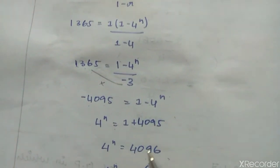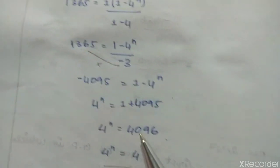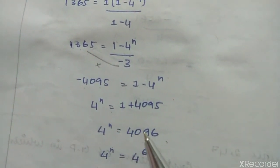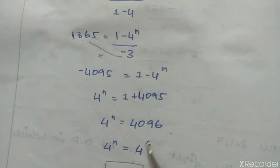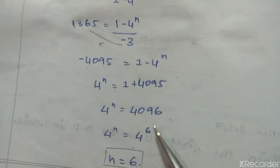So 4 power n equals 4096. Base is 4. 4096 is 4 multiplied 6 times, so n equals 6.